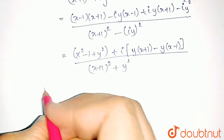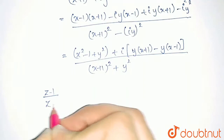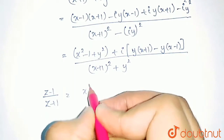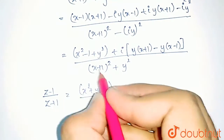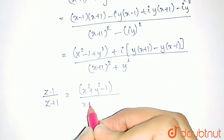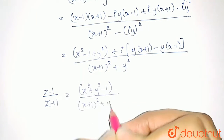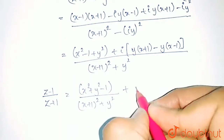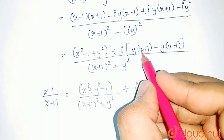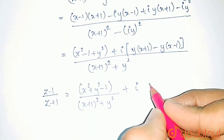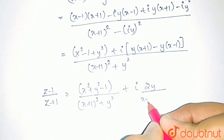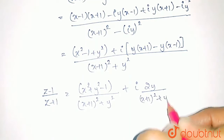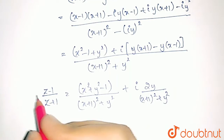So finally, z minus 1 upon z plus 1 equals (x squared plus y squared minus 1) divided by (x plus 1) whole square plus y squared, as the real part, and the imaginary part is iota times 2y — since the xy terms cancel — divided by (x plus 1) whole square plus y squared.